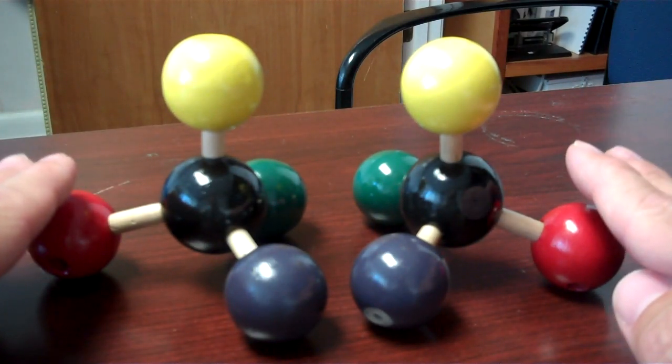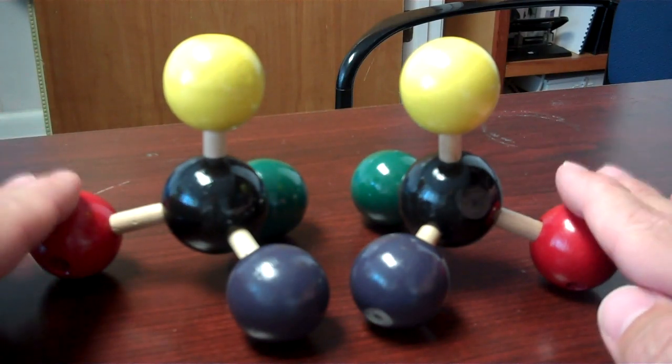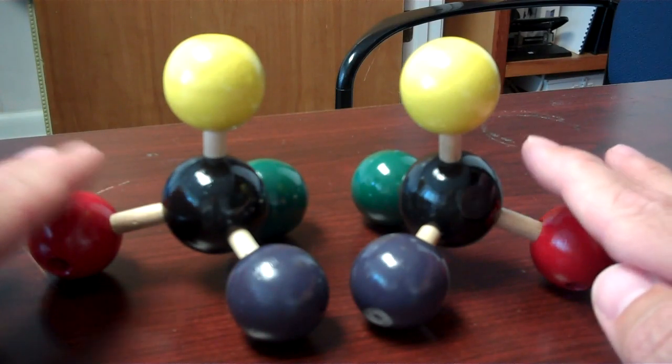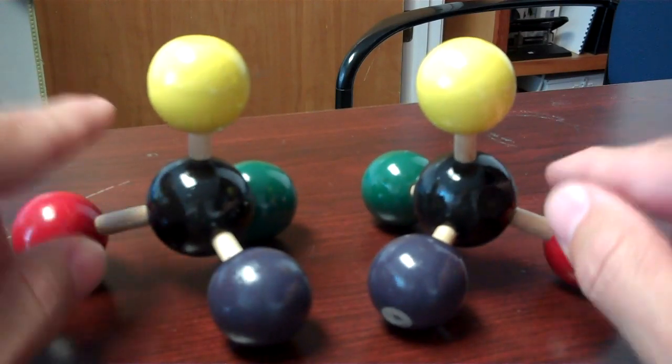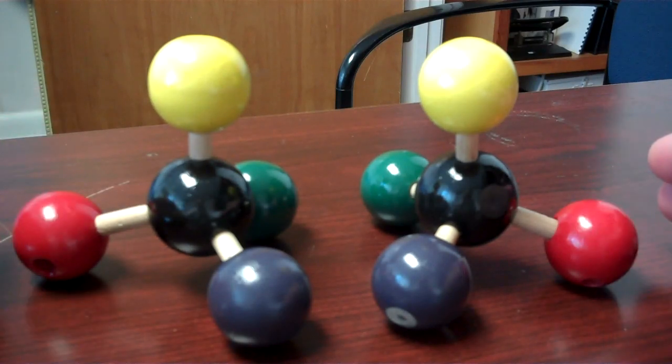Often things like this are represented in textbooks or on a computer screen which is two-dimensional, and depending on the way they're represented it can sometimes be not so obvious what the relationships between molecules are. But in this case we imagine that the carbon atoms which are in the middle are attached to four different substituents in each of these molecules represented by those four different colors.